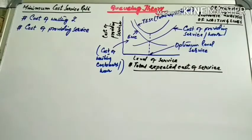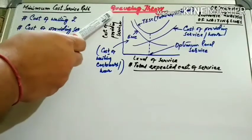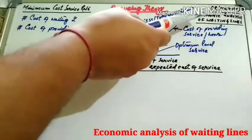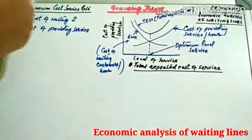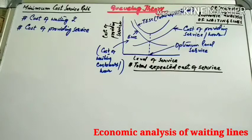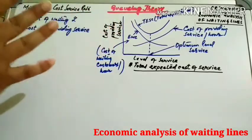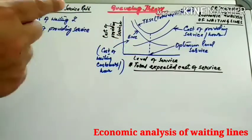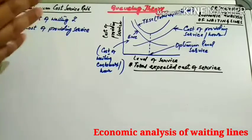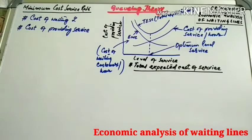Today we have come to the last topic of this particular chapter: queuing theory, or waiting line problems. It is known as Economic Analysis of Waiting Lines, which means we have to find the minimum cost service rate. Without any introduction, I will show you how to find the minimum cost service rate, and after deriving it, we will perform a problem for that formula.